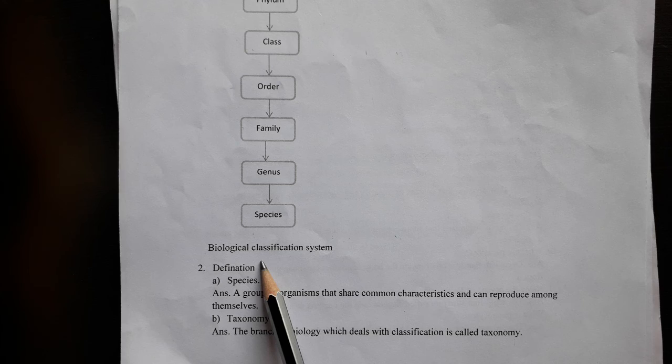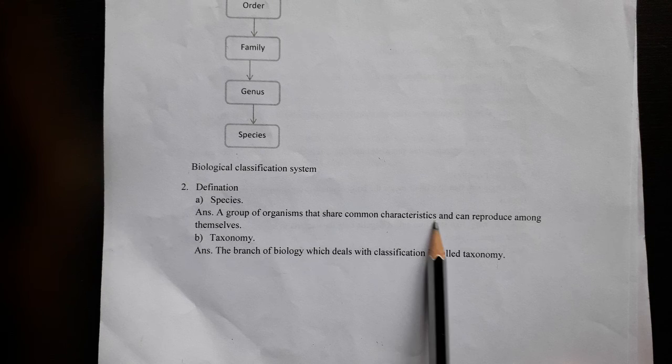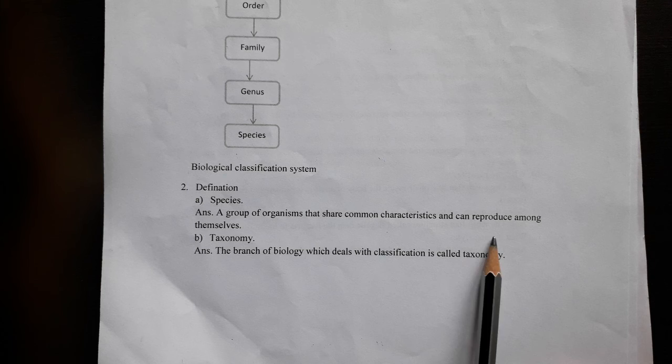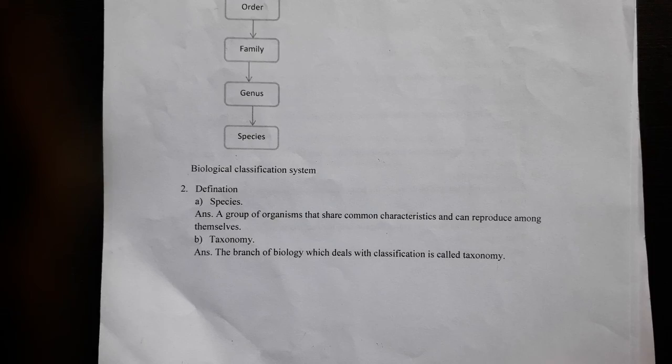Species is a group of organisms that share common characteristics and can reproduce. Taxonomy is the branch of biology that deals with classification.